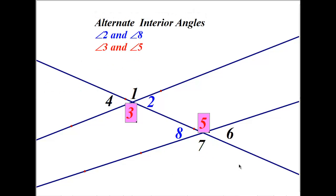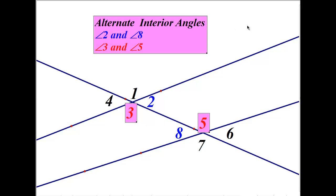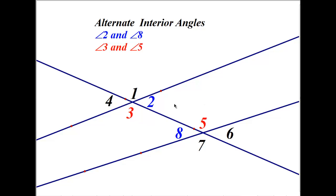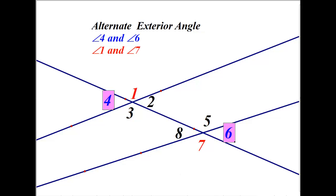Alternate interior angles lie on opposite sides of the transversal but on the inside of the two lines. Angles three and five, and two and eight, are both pairs of alternate interior angles. Alternate exterior angles lie on opposite sides of the transversal but on the outside of the two lines — for example, angles four and six are alternate exterior angles.